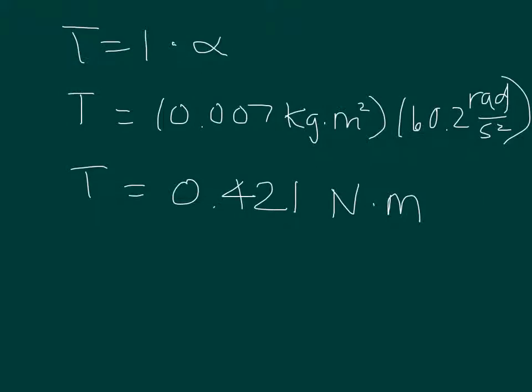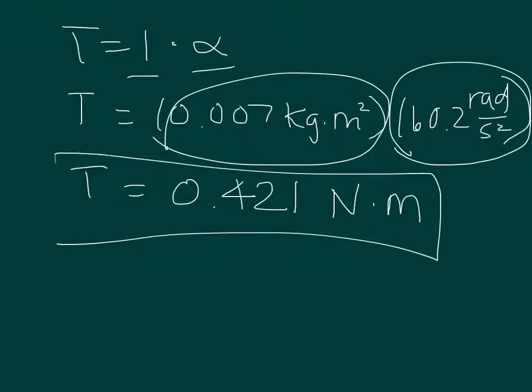Now we can take both of those, the moment of inertia and the acceleration, and finally multiply it together. We got moment of inertia and then we have acceleration, and we get a torque here of 0.421 newton meters.